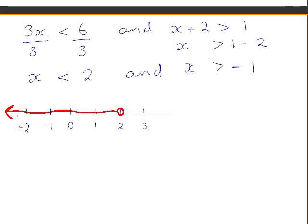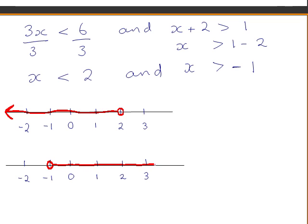Now we represent x > −1 on the number line. It is a good idea to draw both number lines directly underneath each other with the same scale so that you can see the overall solution set clearly. We have an open circle at −1 since −1 is not included, but all real values greater than −1 are included. Because the word 'and' joins the two statements, we want to find where the solution sets overlap.